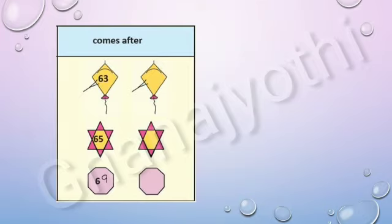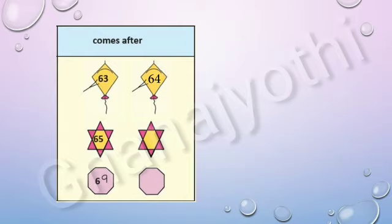Now, let us look at the after number. Look at the first picture — they have given 63. Tell me the number which comes after 63. It is 64. Look at the second picture — they have given 65. Tell me the number which comes after 65. It is 66. Look at the third picture — they have given 69. Tell me the number which comes after 69. It is 70.